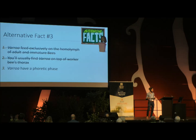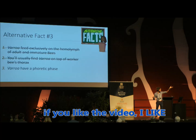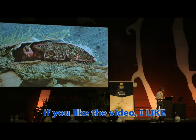We'll come back to that in a moment. But the third of the alternative facts today is that Varroa has a phoretic phase — they do not. We're going to need to update some of our literature around this. Varroa feeds on bees during both stages of its life cycle: it feeds when it's below the capping on the larvae, and it feeds when it is on your adult bees. And it can cause substantial damage during both of these phases.